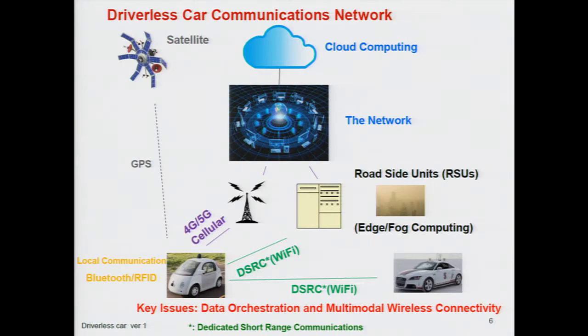Most of the prototypes we see are based primarily on dedicated short-range communication using a Wi-Fi type network. The upcoming focus, with muscle from cellular companies, is on providing 4G and 5G cellular solutions. Just like the old story of Wi-Fi versus cellular systems, we are reenacting a similar story for the driverless car wireless network. Comparing them, neither clearly meets all the requirements for a driverless car — there are trade-offs to discuss.